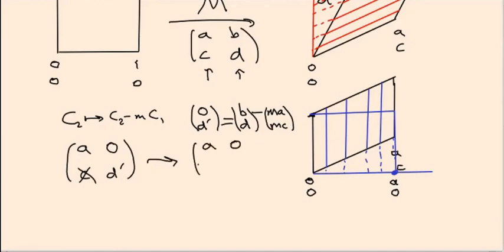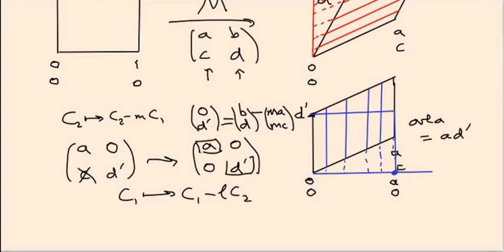So then the result is a rectangle of height d' and width a, and its area or volume in general is just the product of those: a times d'. Which is exactly the product of the diagonal entries of the matrix that I'm left with after doing this pair of column operations.